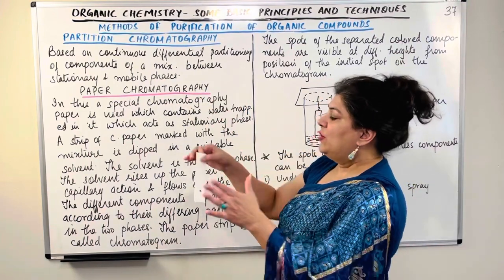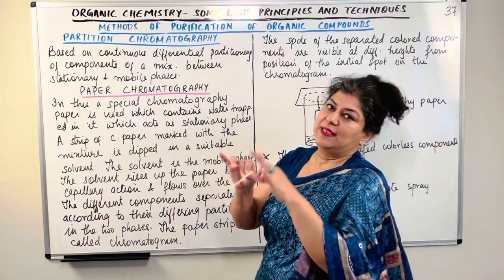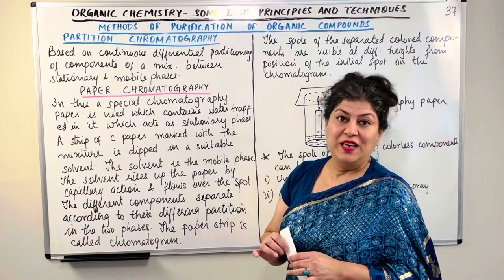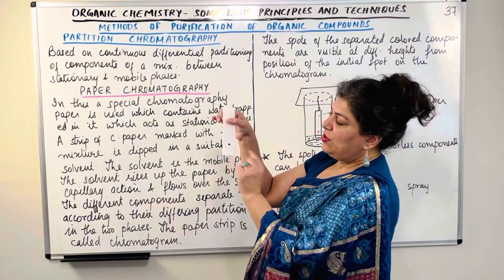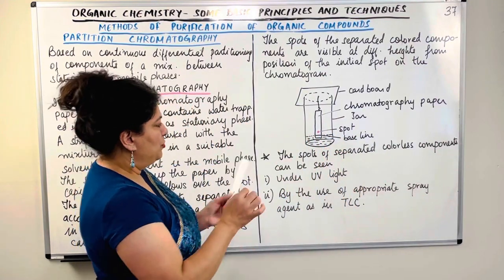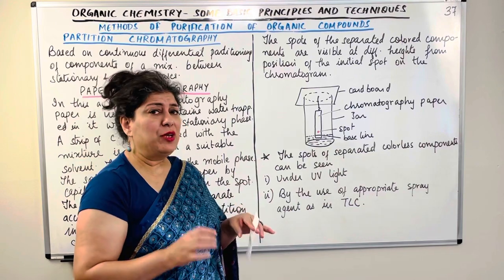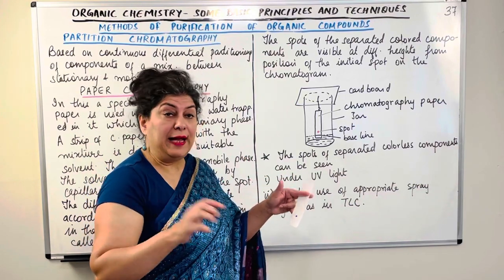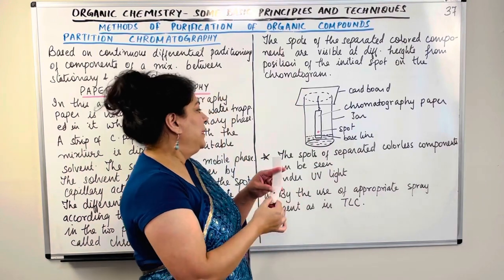In paper chromatography, a continuous differential extraction occurs — the dot keeps moving until the different colored compounds stop at different levels and separate out. A special chromatography paper is used which contains trapped water acting as the stationary phase. The strip is marked with the mixture and a baseline is drawn. That line is known as the baseline, drawn with a pencil. Why pencil? Because pencil lead is graphite, which is non-absorbent and will not start moving with the solvent. You do not want to use ink for the line, as the ink itself would start moving and interfere with the experiment.